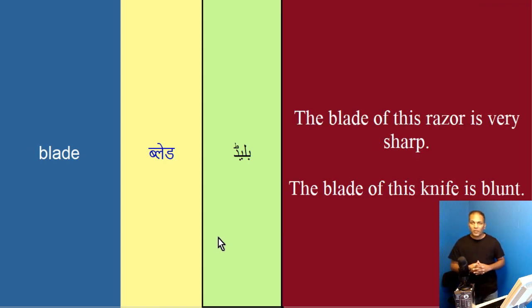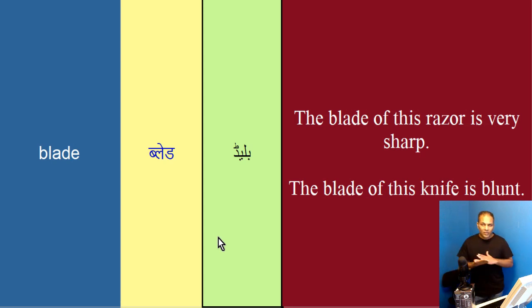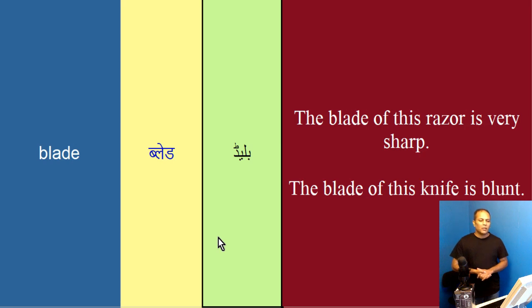Toh dosto, hum day dekha word blade ka meaning blade hi hota hai, joo kaatne ke liay use hota hai. Doh sentences hum day banaay: the blade of this razor is very sharp, aur the blade of this knife is blunt.